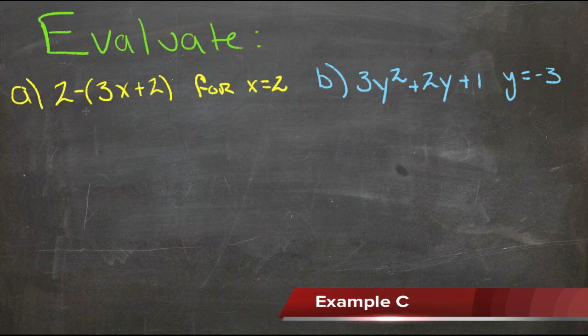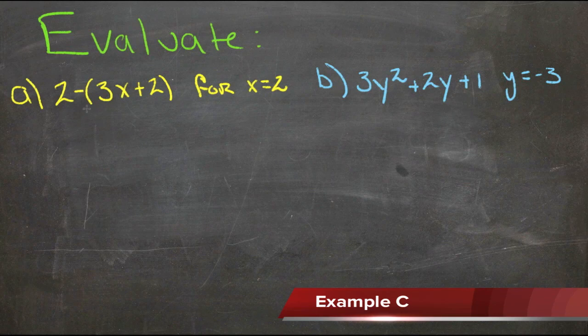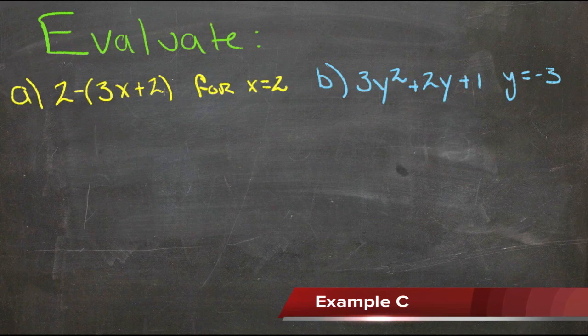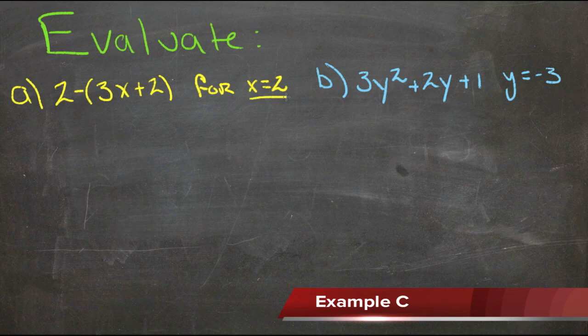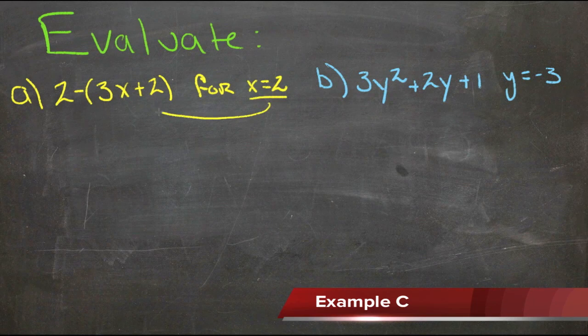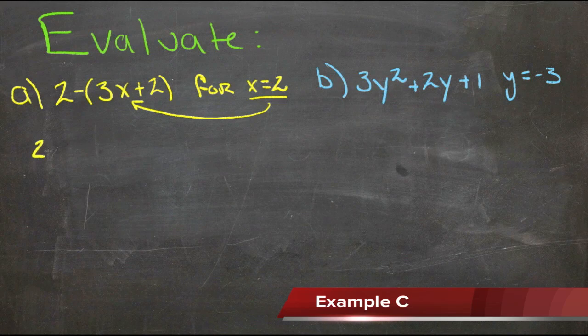In our first expression we have 2 minus 3 times x plus 2, and we're going to evaluate that for x equals 2. So we'll take that 2, plug it in where x is, and we get 2 minus the quantity 3 times 2 plus 2.